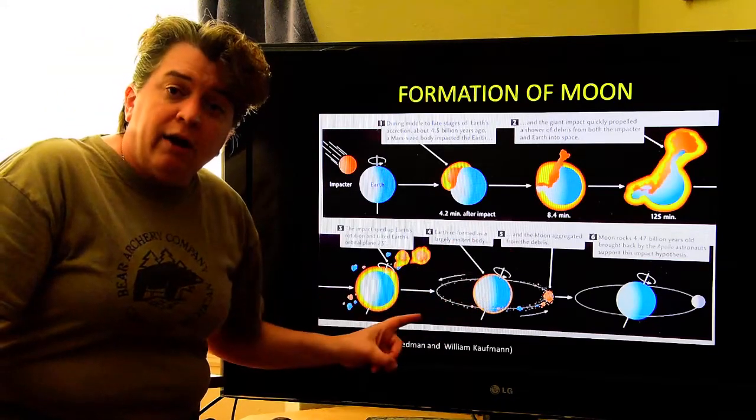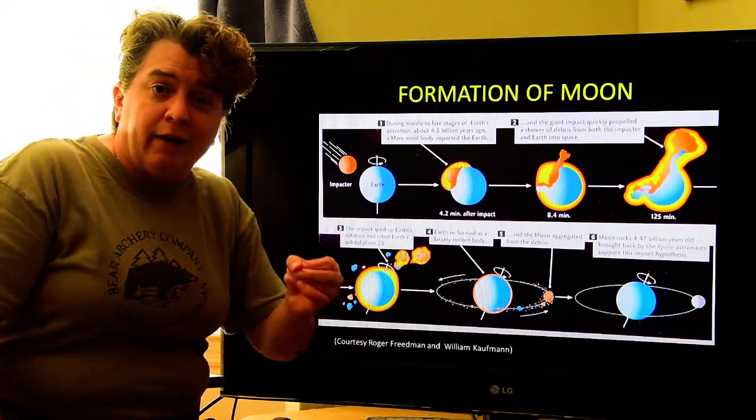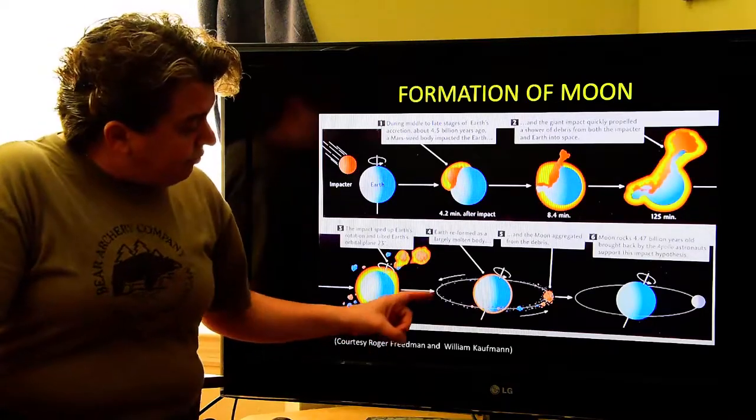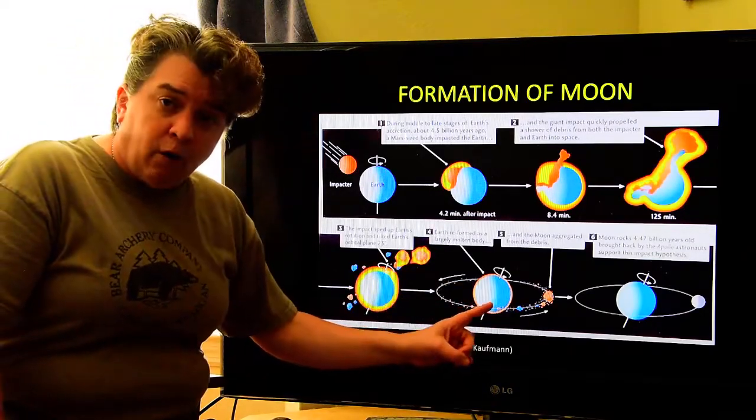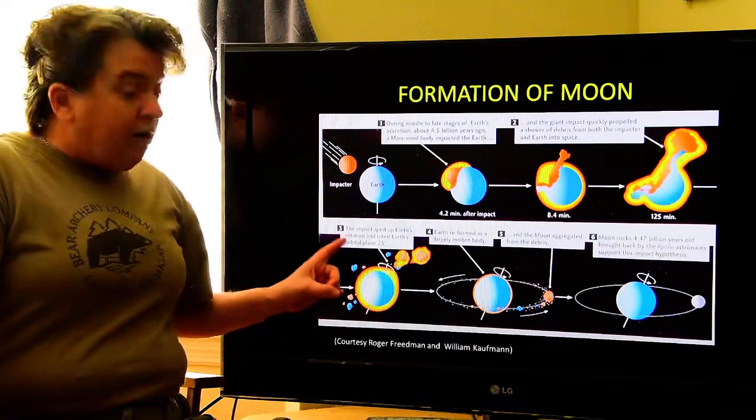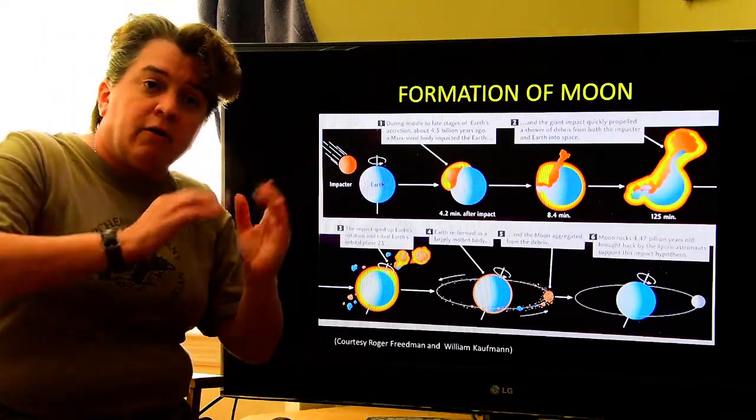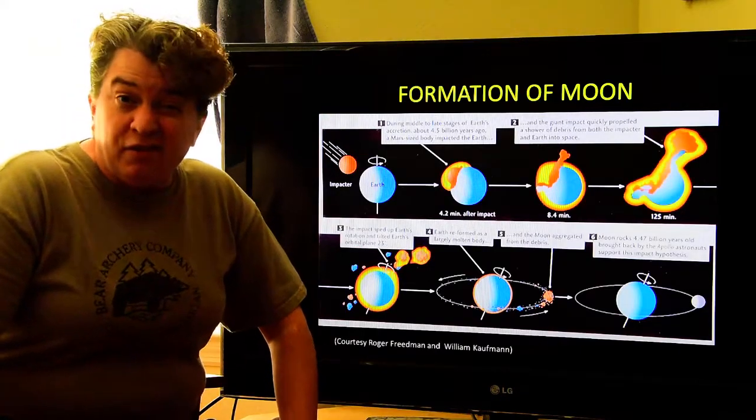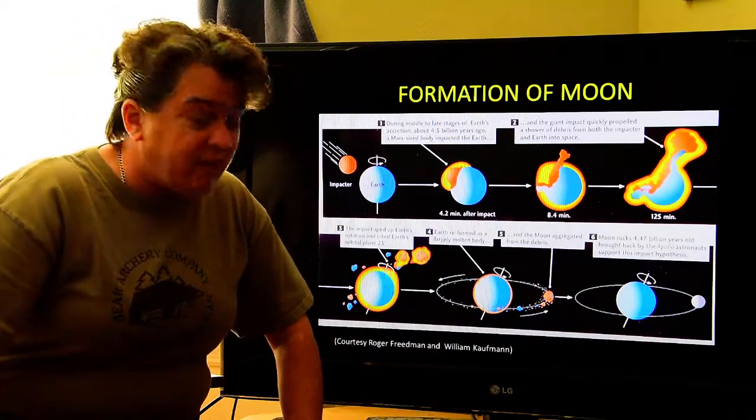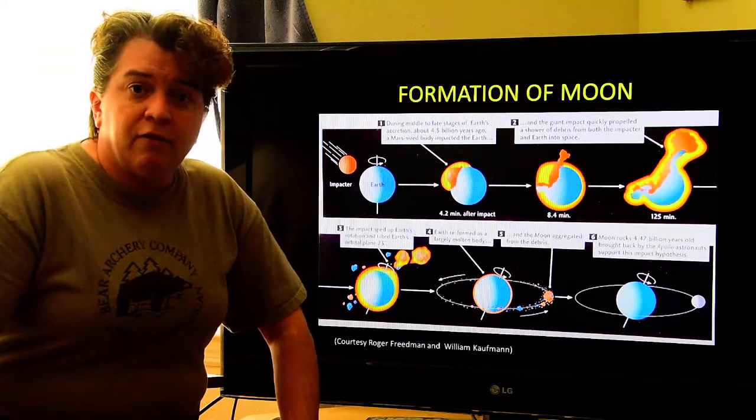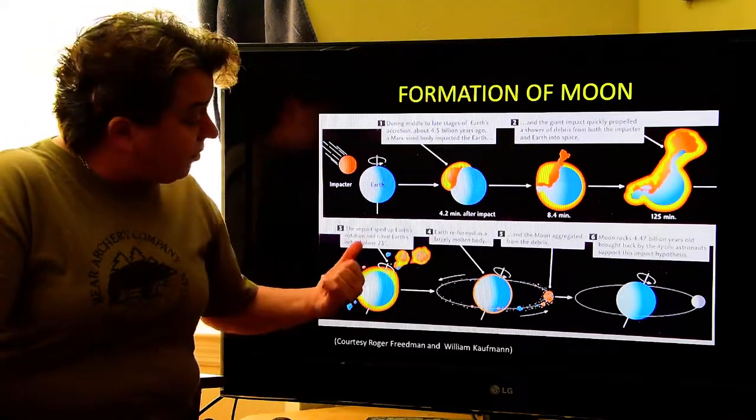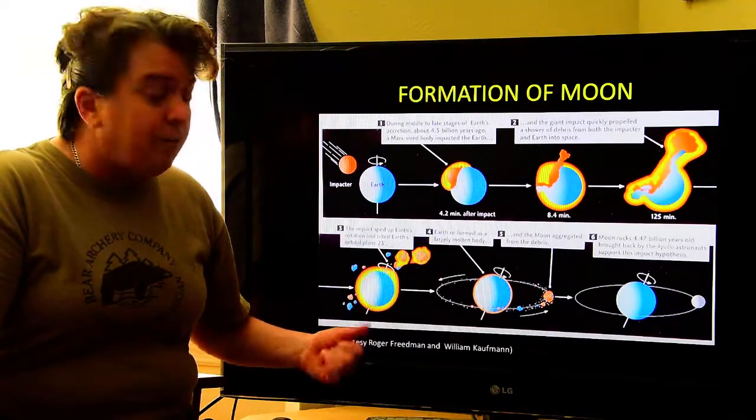And so, for just a little while in Earth's history, we actually had a ring, kind of like Saturn. But, in addition to putting all this debris in orbit around the planet, it also tilted Earth's orbit to about 23 degrees. And it also sped up Earth's rotation. And so, if you look at a globe today, you always see Earth kind of kinked over. It's because of this impact that occurred.